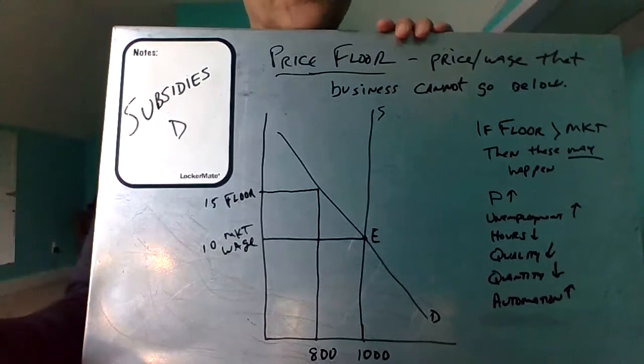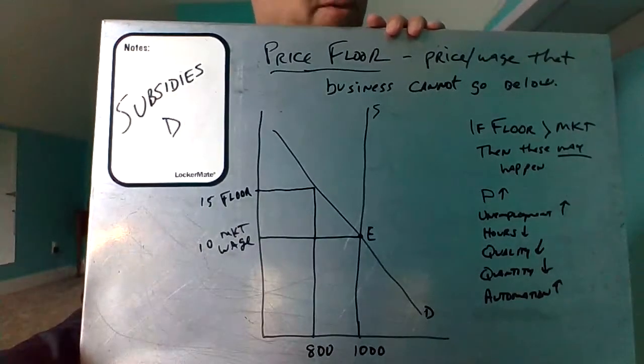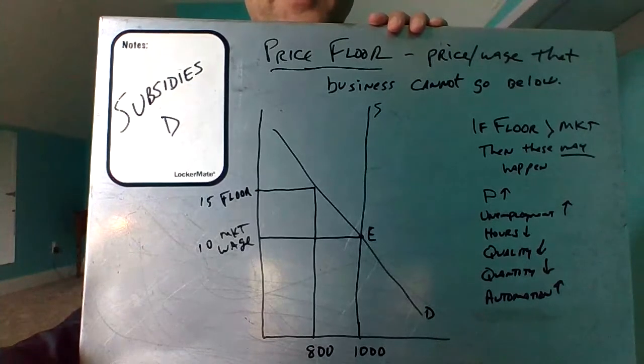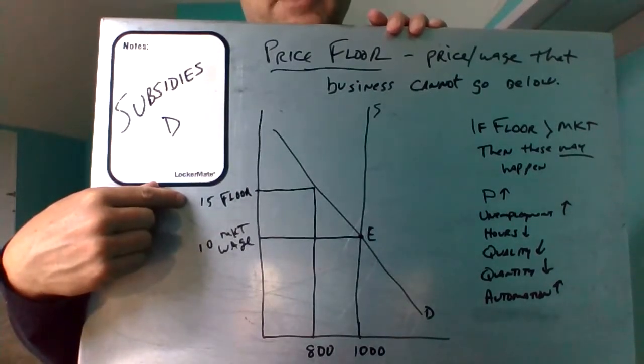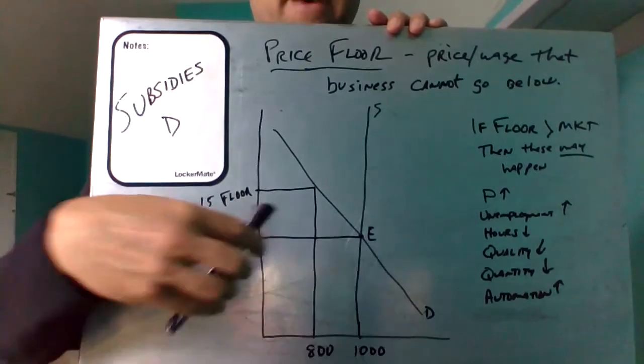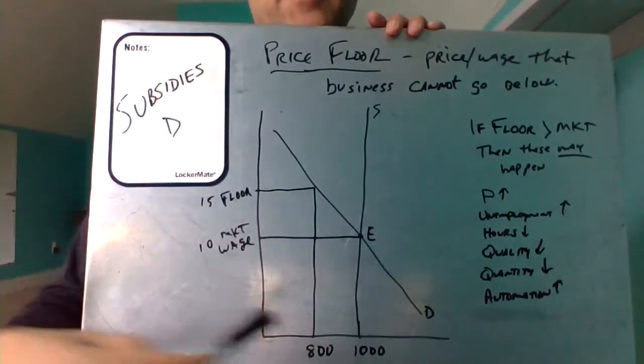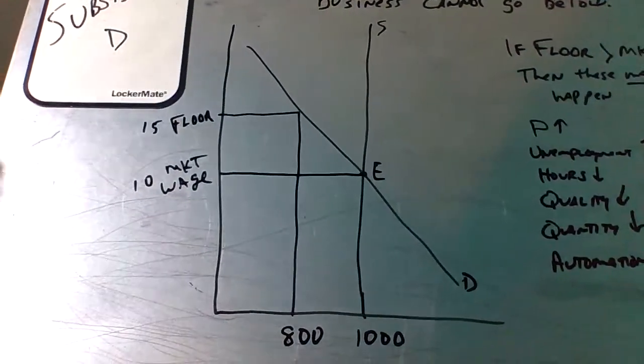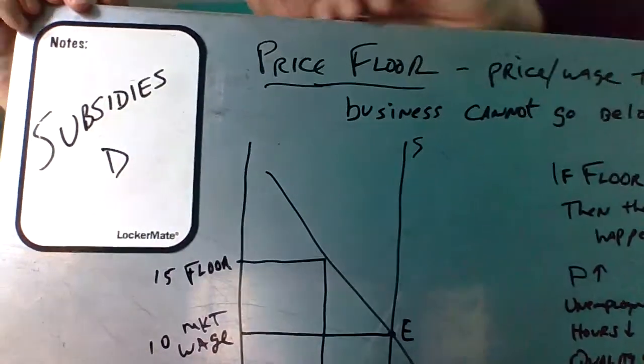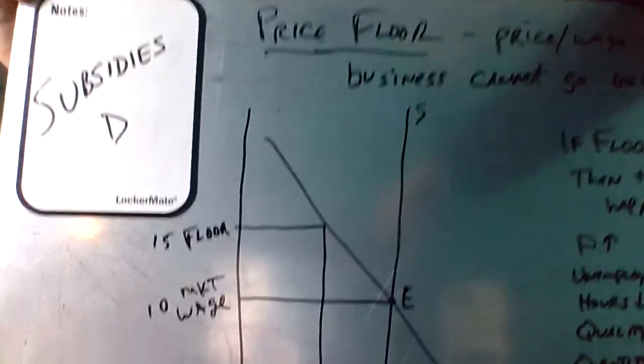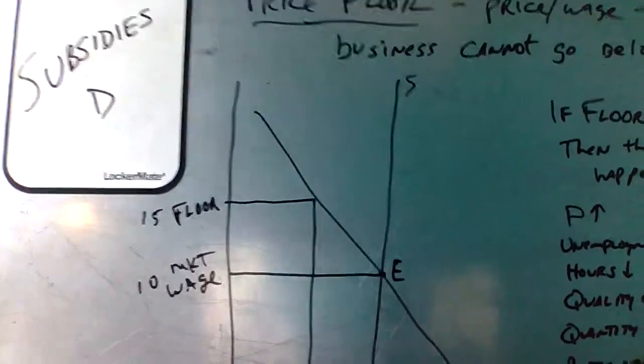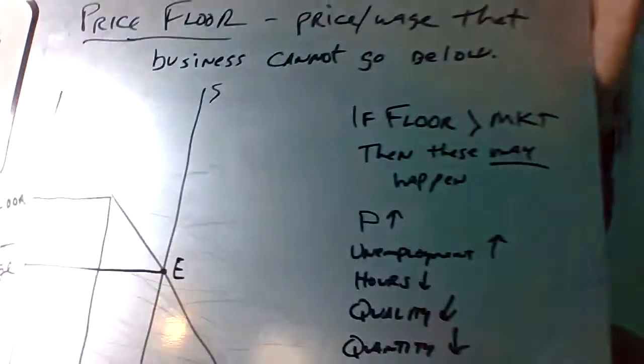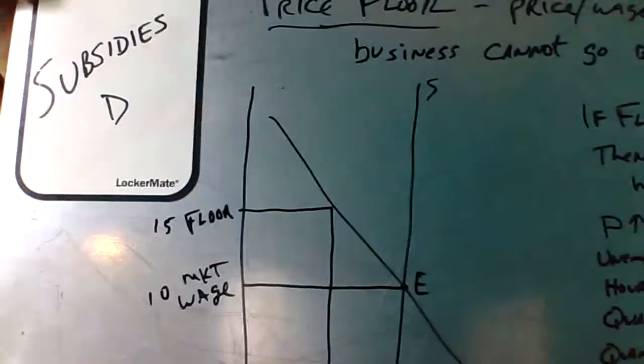Now, let's say that the Congress passes and Trump signs into law a minimum wage increase up to $15. So we've got a new floor. So now, just draw that part, and we'll come back to this part. But now you've got a new floor.